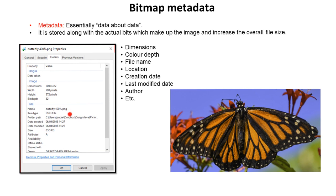We also have where it's saved, the date it was created, when it was last modified, and its file type. There are all sorts of metadata attributes saved along with an image and they all add to the overall size of the image file.